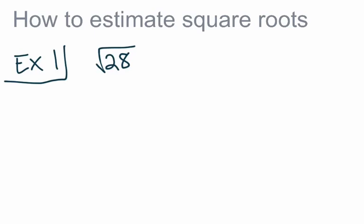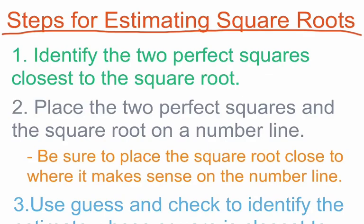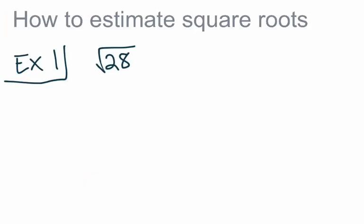What we can do is actually estimate the square root to one decimal place. The first step we want to take is to identify the two perfect squares closest to the square root. In this case, the two perfect squares closest to 28 are going to be 25 and 36. 5 squared gives us 25, and 6 squared gives us 36.